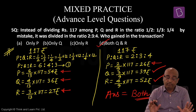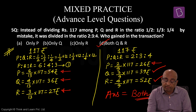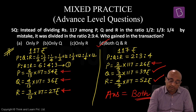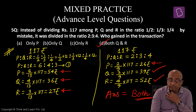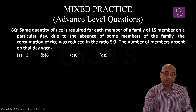कुछ बच्चे केवल ratio को compare करके कहते हैं answer R है — जो completely गलत है। क्योंकि first part में 6, 4, 3 और second part में 2, 3, 4 देखकर directly P को कम मिला बोलना गलत है। Actual calculation जरूरी है। Answer है both Q and R। Example number 6।